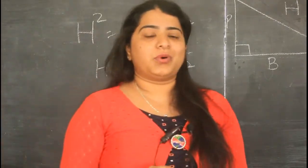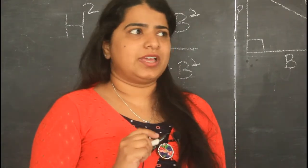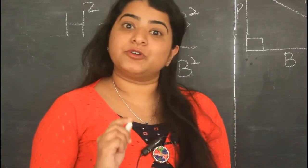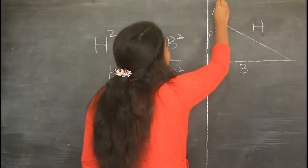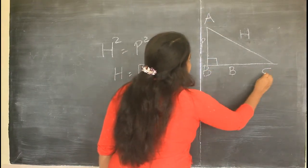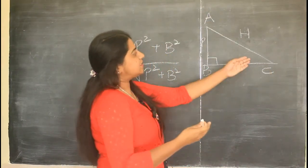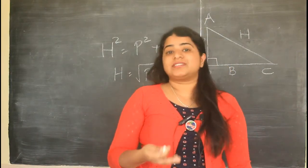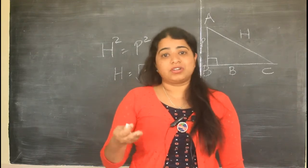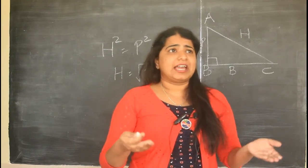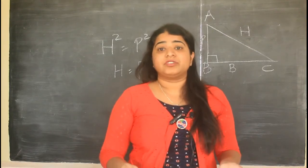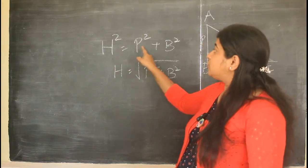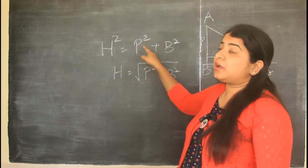I can see some of you wondering — it is written in my textbook as ac² = ab² + bc². Well, your textbook is right, because they consider the triangle as ABC. So ac² = ab² + bc². But triangles don't just exist as A, B, or C — it can be DEF, it can be PQR, it can be anything. So it is better for you to remember it as: hypotenuse² = perpendicular² + base².